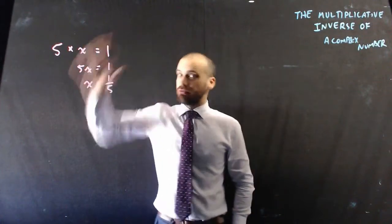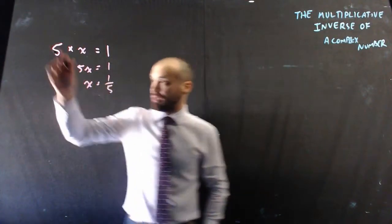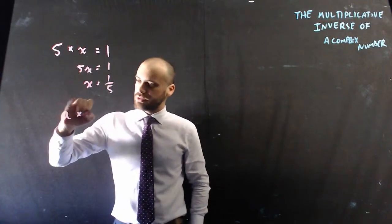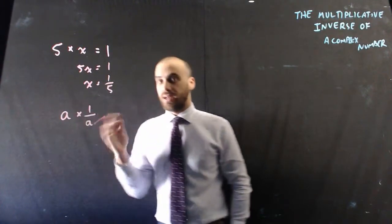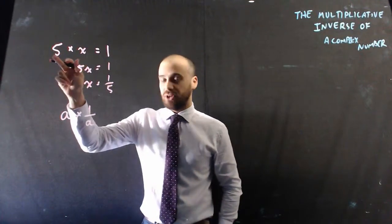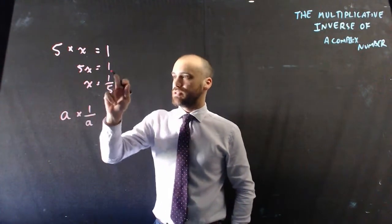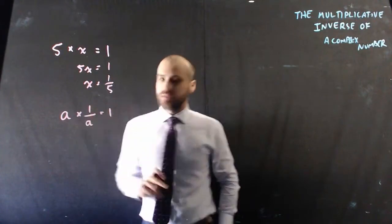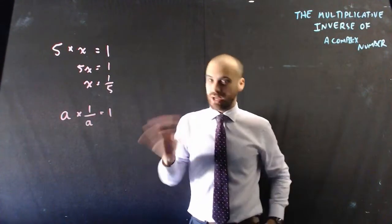So the general rule for this is that if I have a number, the multiplicative inverse is 1 on that number. You can see that I had a number 5, the multiplicative inverse is 1 on 5, and the answer, a times 1 on a, is 1. So that's the multiplicative inverse of just regular numbers.